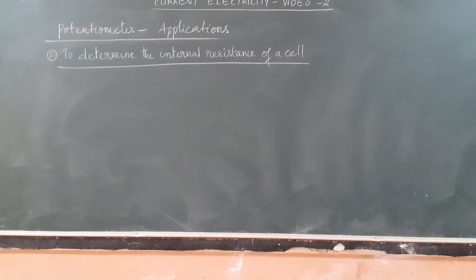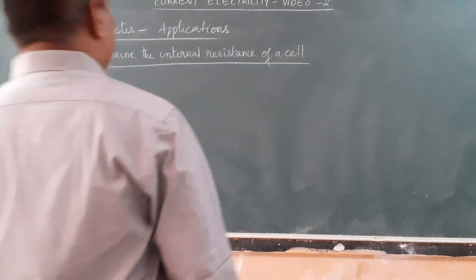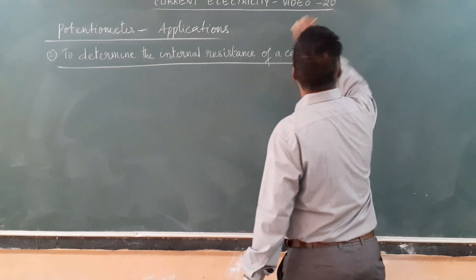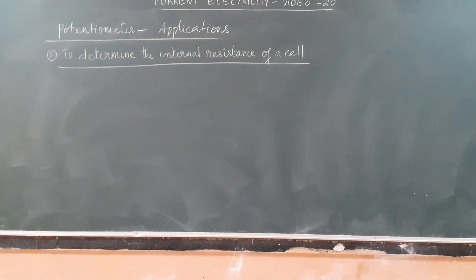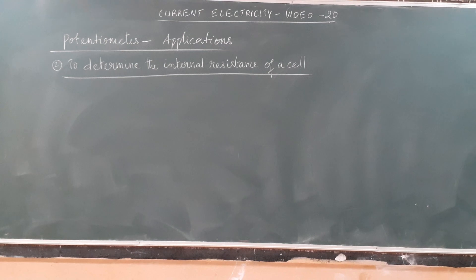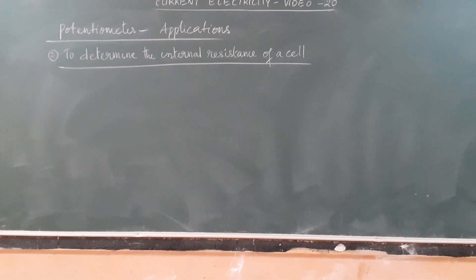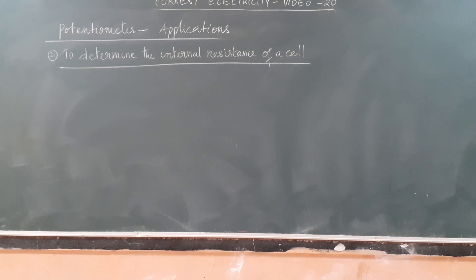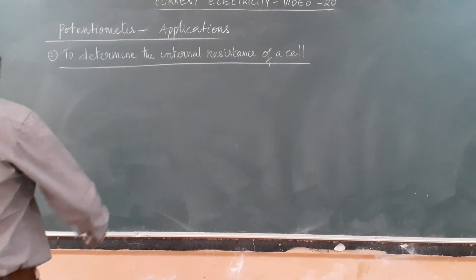Hi children, good morning. This is video number 20 from the chapter Current Electricity, the last concept of this chapter. I am going to discuss the potentiometer and its applications. In video number 19, I uploaded the first application of potentiometer. This is the second application, which is to determine the internal resistance of a cell.